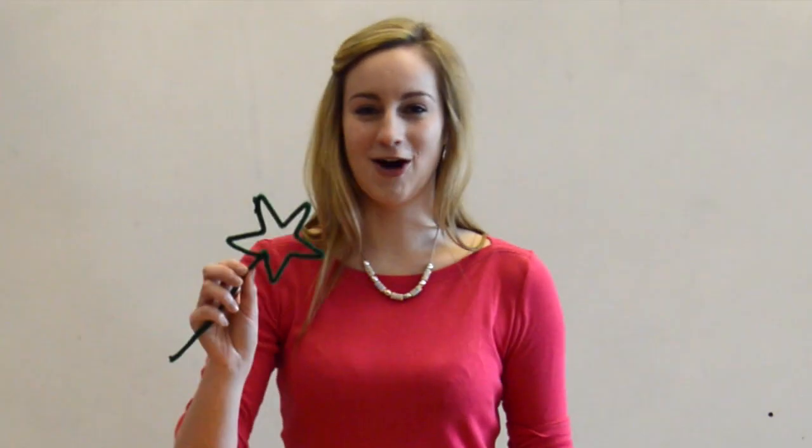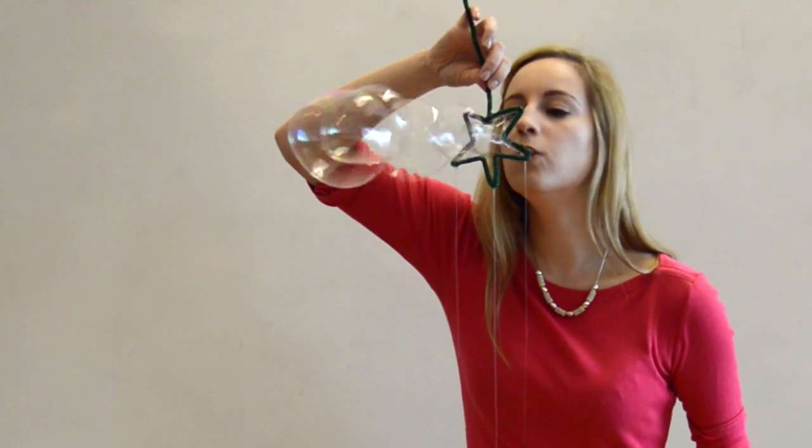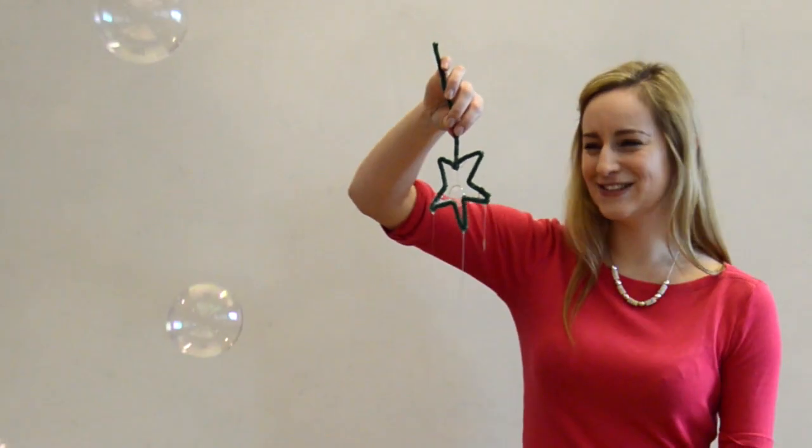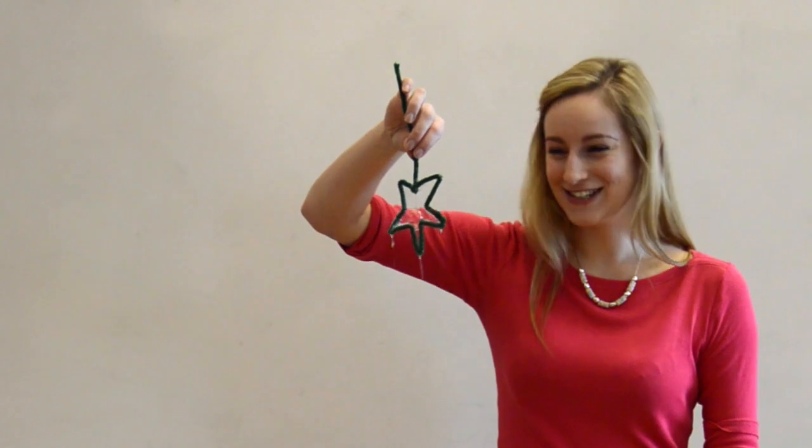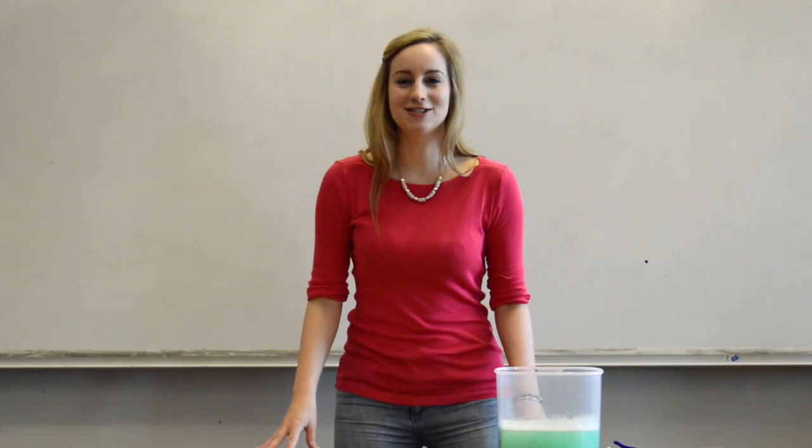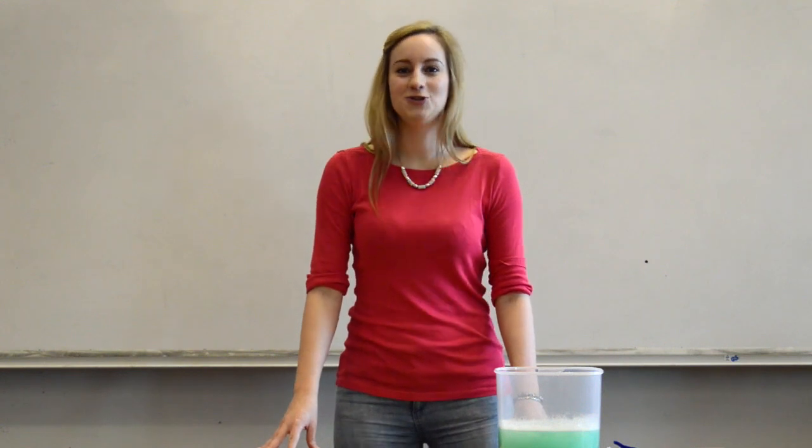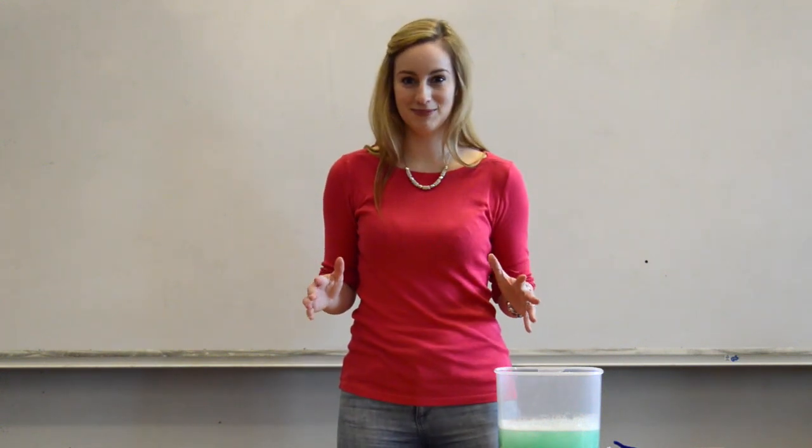So using my round bubble wand we get spherical bubbles. What do you think will happen if I use a star bubble wand? We still get spherical bubbles, not star bubbles. That's because bubbles always want to be the smallest they can be, and normally that's a sphere. What if we use a different shaped bubble wand to make different shaped bubbles?